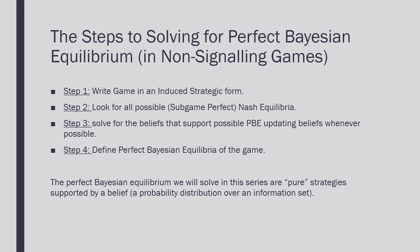The perfect Bayesian equilibrium we will solve for in this series are going to be pure strategies supported by a belief, which is going to be defined as the probability distribution over an information set. This is all for this introduction, and in the next video we will get into our first example. I will see you there.